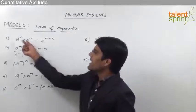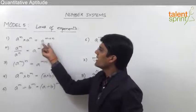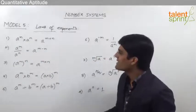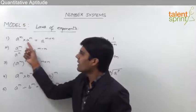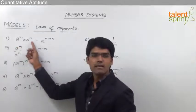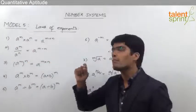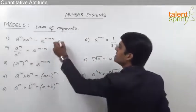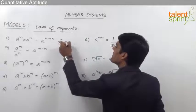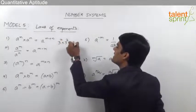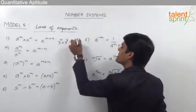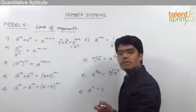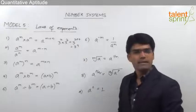The first law is: a power m into a power n is equal to a power m plus n. Whenever the bases are equal and in multiplication form, the powers can be added. For example, 3 power 2 into 3 power 7 can be taken as 3 power 2 plus 7, which is equal to 3 power 9, since the bases are equal and they are in multiplication form.